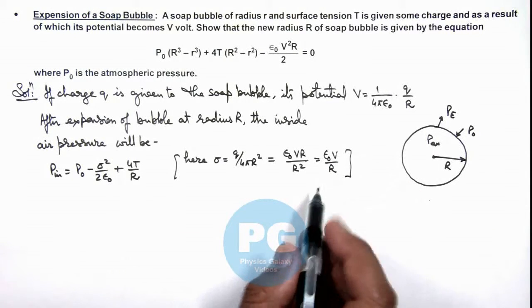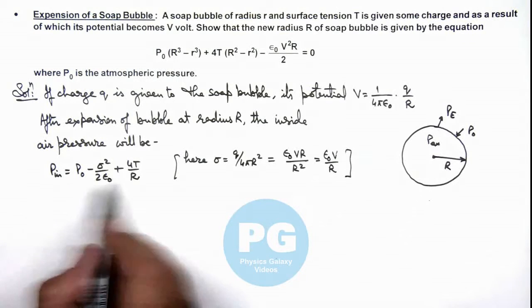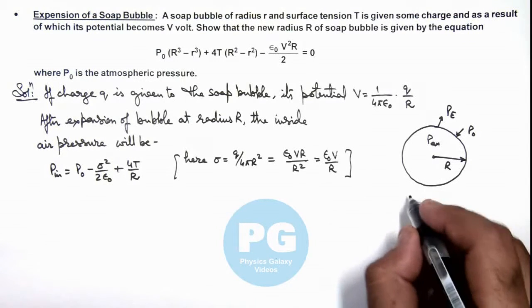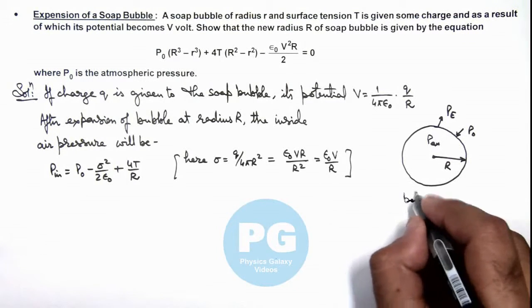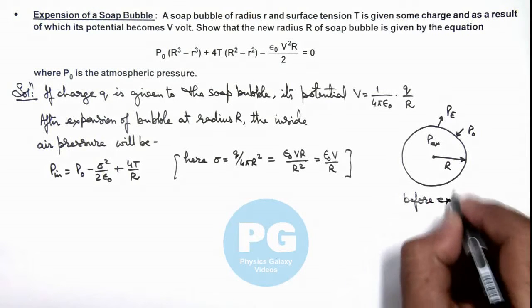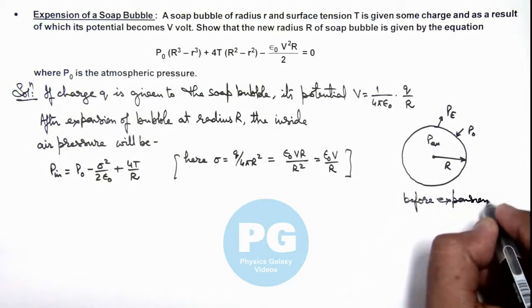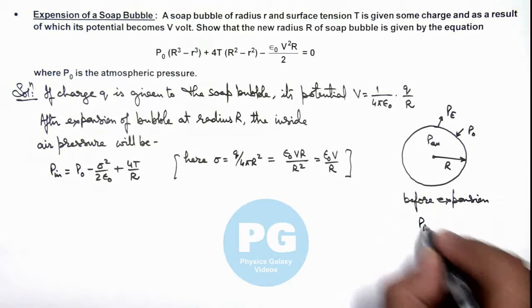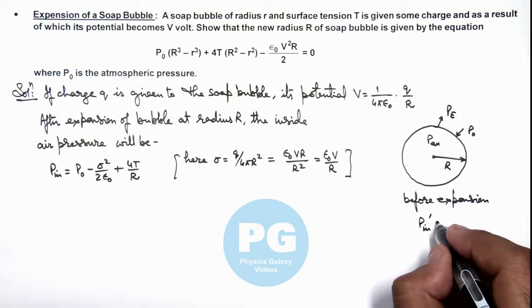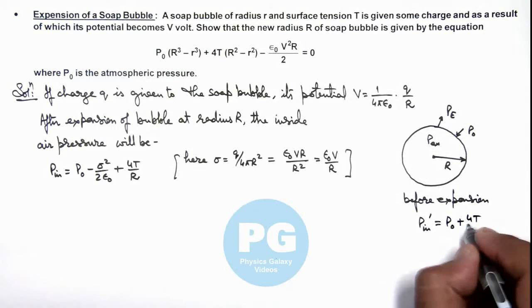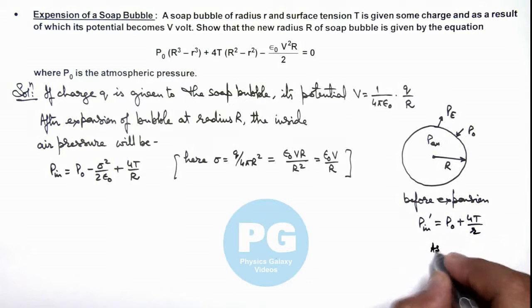And now as the final pressure we are having this, we can write before expansion the inside pressure was P'ᵢₙₛᵢdₑ which can be written as only P₀ + 4T/r, as initially q charge was not there.